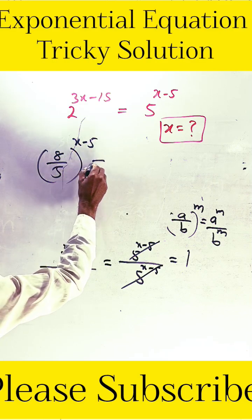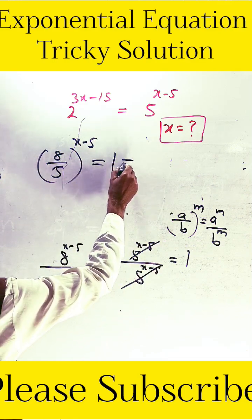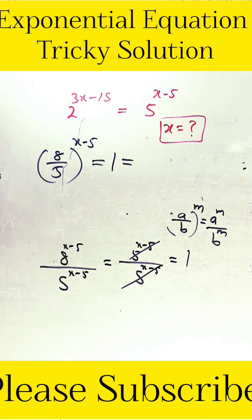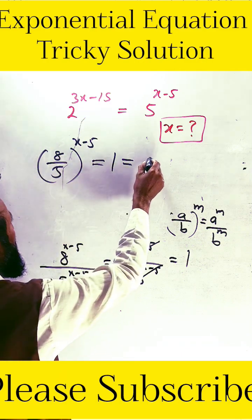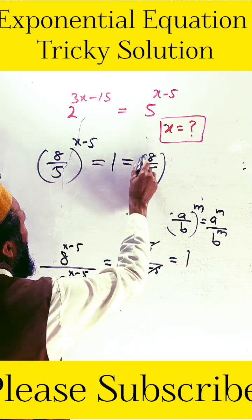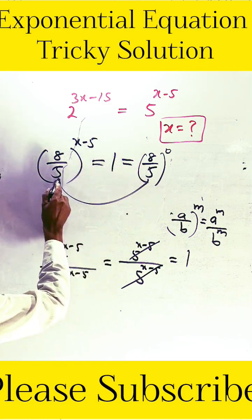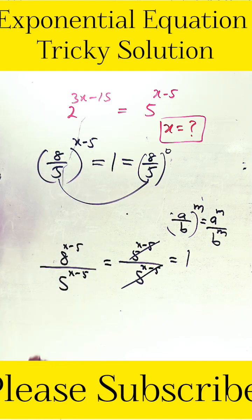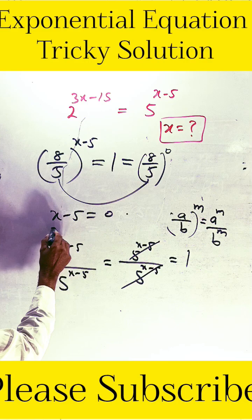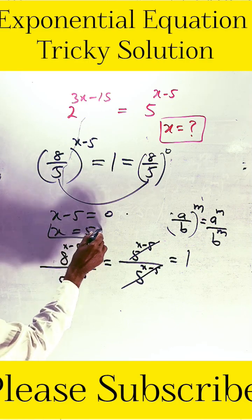And here the base is 8 divided by 5. We can write this one, 8 divided by 5 whole exponent of 0 is equal to 1. Now the bases are same, so we are comparing their power. x minus 5 is equal to 0, and x is equal to 5 is the solution of this question.